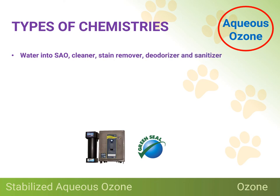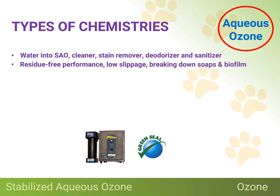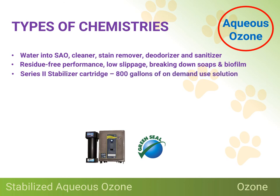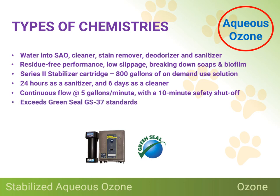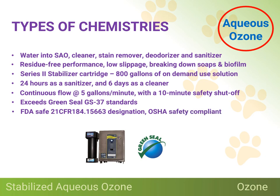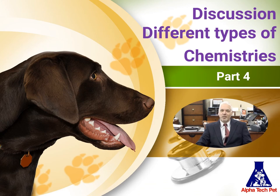It provides residue-free performance for a long-lasting clean and low slippage by breaking down residual soaps and cutting through biofilm. Each Series 2 stabilizer cartridge makes up to 800 gallons of on-demand-use solution, and solutions once made are good for up to 24 hours as a sanitizer and up to 6 days as a cleaner. The dispenser is designed for continuous flow to fill containers at a rate of 5 gallons per minute with a 10-minute safety shutoff feature. It exceeds Green Seal GS37 standards, and it has FDA safe 21 CFR 184.1563 designation and is OSHA safety compliant. This concludes Part 4 of our Facility Sanitation Awareness webinar. Thanks so much for joining us.